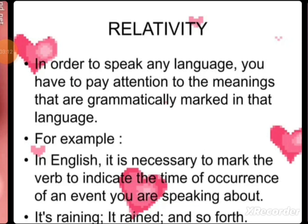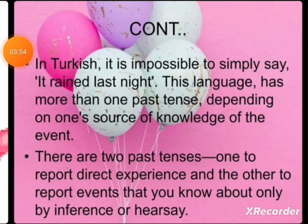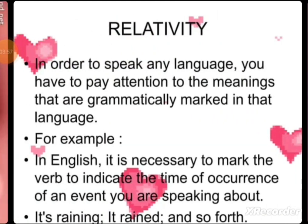What is relativity? In order to speak any language, you have to pay attention to the meanings that are grammatically marked in that language. For example, in English, it is necessary to mark the verb to indicate the time of occurrence. You change the form of the verb or use a helping verb — you always use 'has' or 'have' with the third form to make the perfect tenses. To form a present continuous tense, you use '-ing' and 'is.' So in English, you give special importance to tense.